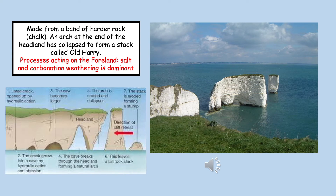The next landform is an erosional landform — an example of a stack. This stack has formed in a headland referred to as the foreland on this coastline. It formed as a result of an arch at the end of the headland collapsing to leave a pillar of rock called a stack. The name of this particular stack is Old Harry, which can be seen at the end of the foreland in the image on the right hand side. Salt and carbonation weathering are the two dominant processes constantly acting upon this headland.